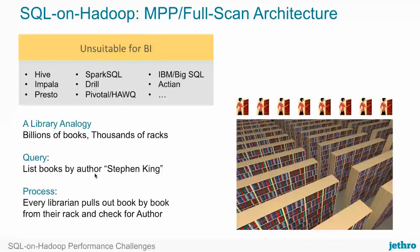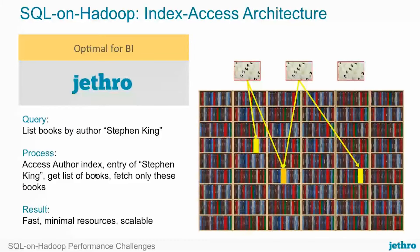With Jethro, we store data in a columnar format. We take every single column in the data and put an index on it. What this allows us to do is only read necessary data when you query the database. In our example, looking for books by author Stephen King, Jethro is going to know exactly which row IDs to go fetch those Stephen King books from without reading the rest of the information. So it's going to use less resources and be much faster than having to go through the entire data set.